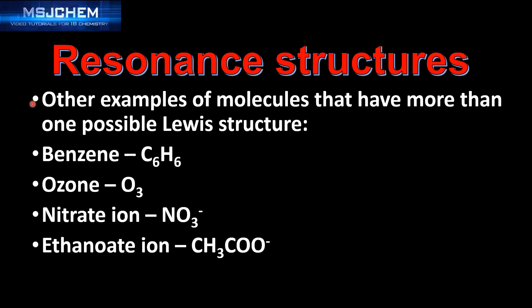Other examples of molecules that have more than one possible Lewis structure are benzene, ozone, the nitrate ion and the ethanoate ion.